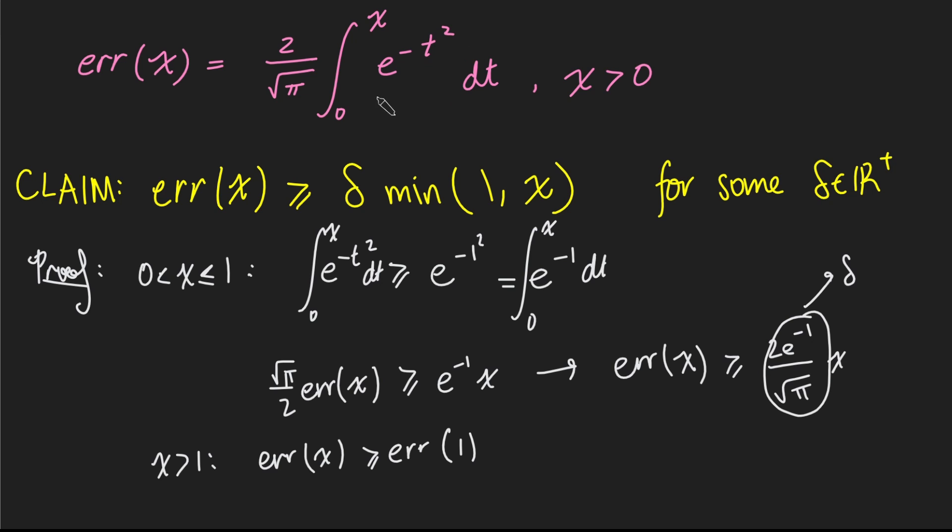And so if you're integrating a strictly positive function, it will get bigger and bigger if you make your upper limit bigger and bigger. So as you make x bigger and bigger here, error of x will be increasing. And so therefore, if x is bigger than 1, error of x will be at least error of 1.